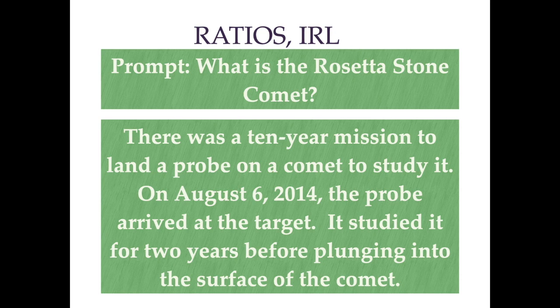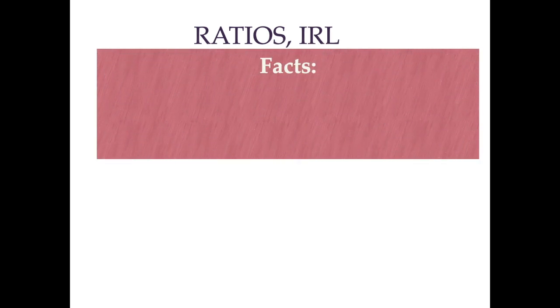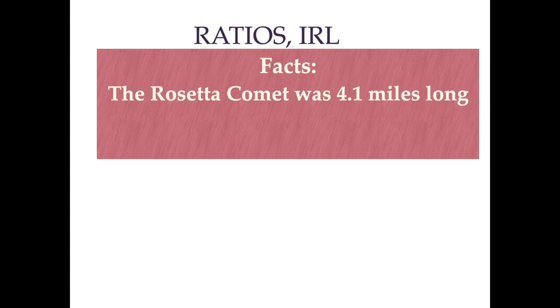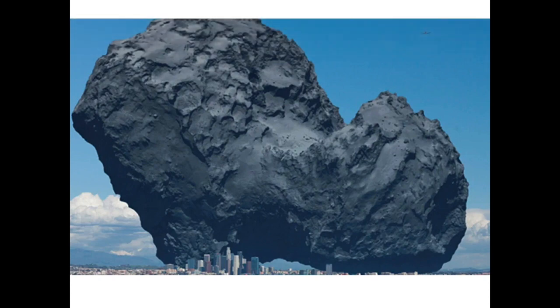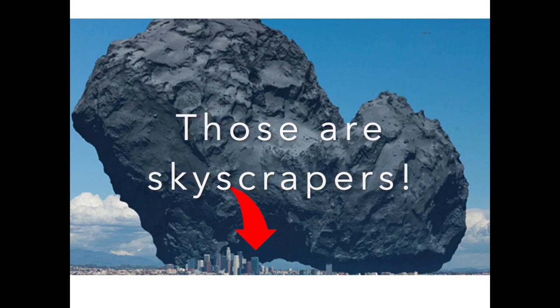But you can't understand how large that comet is until we talk about its ratio. The Rosetta Stone Comet was 4.1 miles long. To understand how big 4.1 miles is, I'm going to give you a ratio that compares downtown Los Angeles to the comet — the length of downtown compared to the comet. Walking in downtown Los Angeles is like walking in a calm, straight line on nice sidewalks. When you're walking on a comet, 4.1 miles is not so straight and nice. This image helps you understand why ratios are so important. Look at that comet.